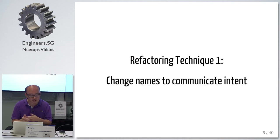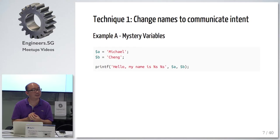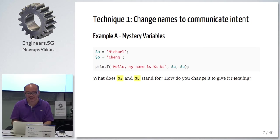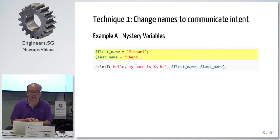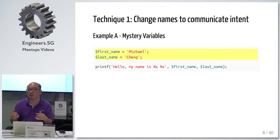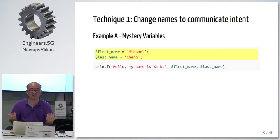So the first refactoring technique — number one — is change names to communicate intent. How many of you have seen mystery variables? Like A, B — what does A and B stand for? How do you change them to give them meaning? You look at the implementation and the data it contains. Usually you look at the data and you're like, okay, this is somebody's name. Usually it should mean first name and last name. Name your variables in a way that communicates meaning, what they're supposed to be used for and how they'll be used. If it communicates intent, it's easier to glance at it and figure out what it is.